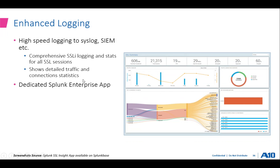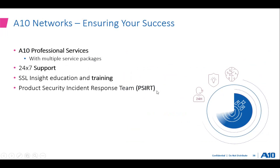Lastly, enhanced logging. This graph is generated by the Splunk SSLi app — you can integrate with third-party SIEM or SOC solutions and get intuitive insights that help identify where traffic is going. This gives you deep visibility into the network and enables actionable tasks. Comprehensive SSL logging provides detailed traffic and connection statistics for all SSL sessions. The dedicated enterprise Splunk app for SSLi produces the dashboard you can see here.